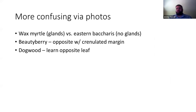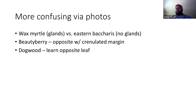People are mixing up wax myrtle and eastern baccharis a lot more than expected. Wax myrtle has glands on it and is dark green. Eastern baccharis doesn't have glands and is a paler green. If you see a cottony flower on it, that's eastern baccharis. They both have long leaves with serrations at the apical half and a cuneate base — but the glands and color are the key differences.